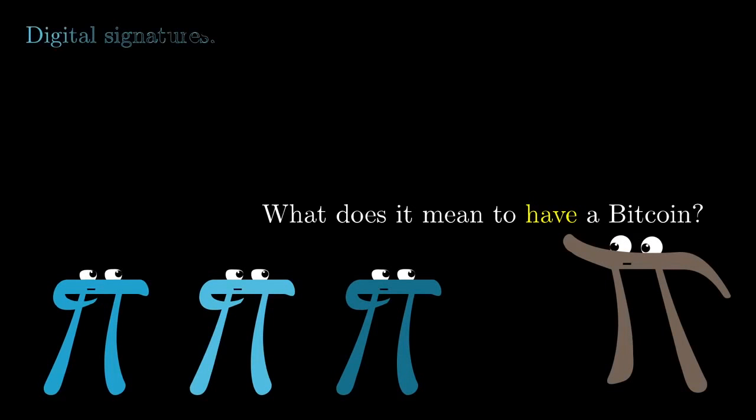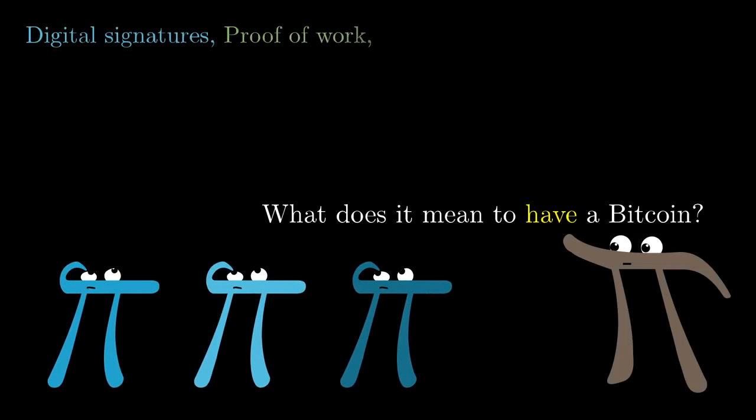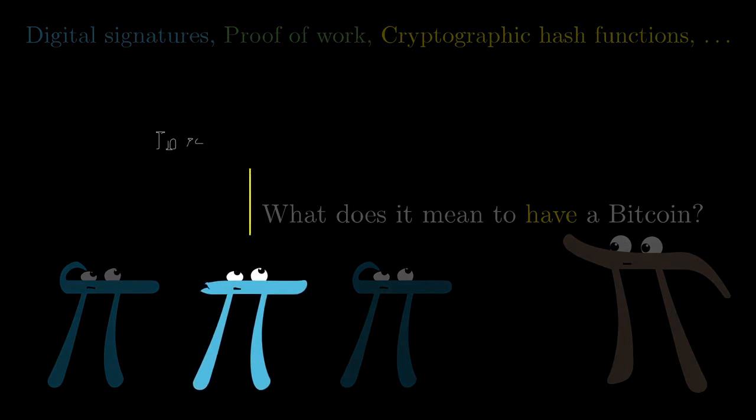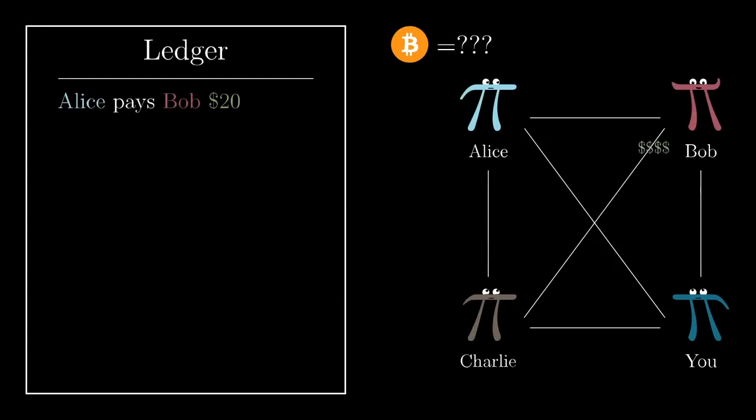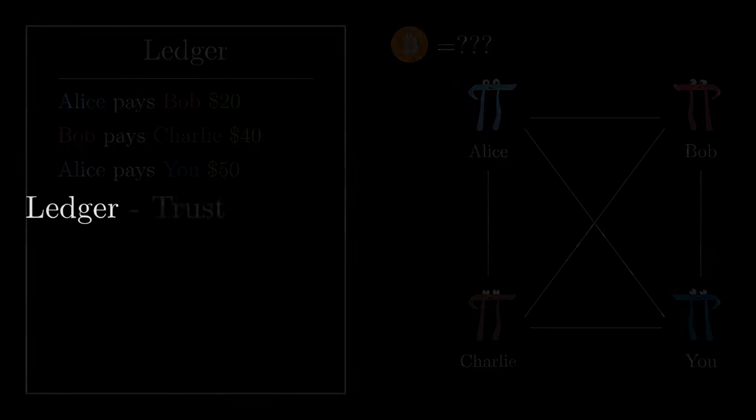To get there, and to make sure that the technical details underlying the answer actually feel motivated, what we're gonna do is walk through, step by step, how you might have invented your own version of Bitcoin. We'll start with you keeping track of payments with your friends using a communal ledger, and then as you start to trust your friends and the world around you less and less, and if you're clever enough to bring in a few ideas from cryptography to help circumvent the need for trust, what you end up with is what's called a cryptocurrency.